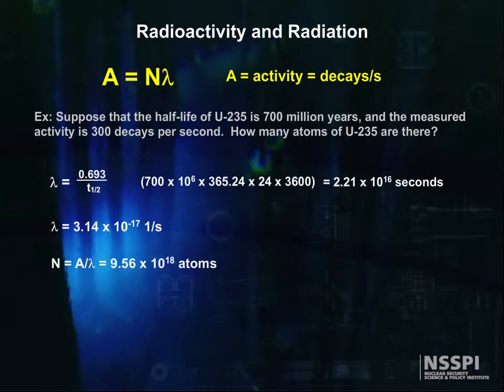So returning to our magic formula, we know the activity A, we know lambda, so we can find the number of U-235 atoms, and it is 9.56 times 10 to the 18th atoms.